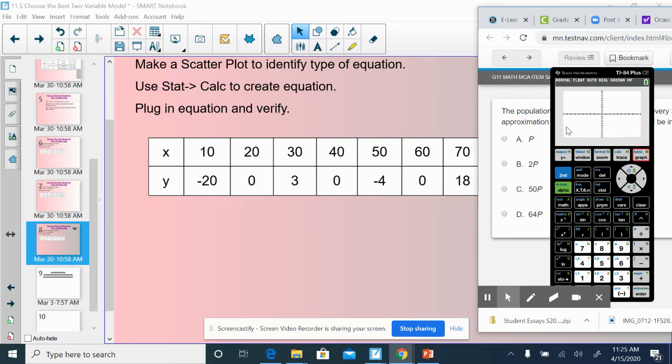Now we need to tell the calculator to zoom in on the stat plot. If I just push graph, this is always just graphing negative 10 units to the left, 10 units to the right, 10 units up, 10 units down. I want it to zoom in on wherever my data set is. Zoom 9, zoom stat, is going to zoom in on the stat plot. So zoom 9.